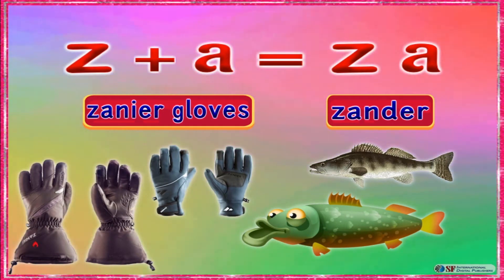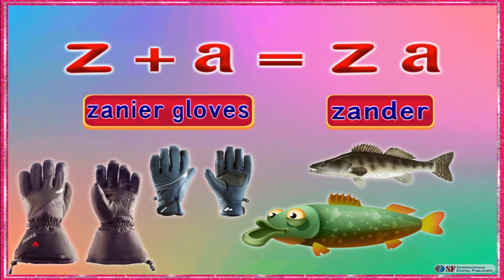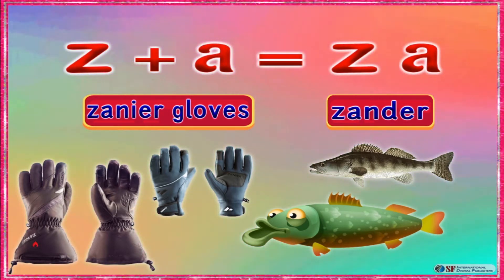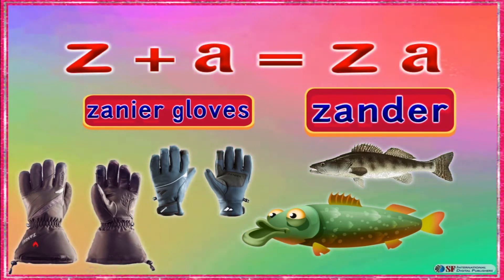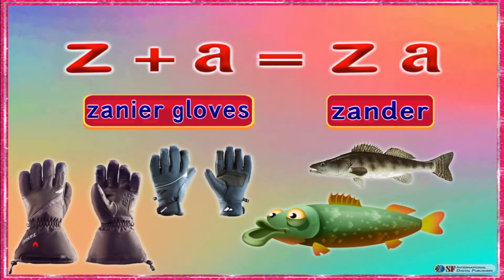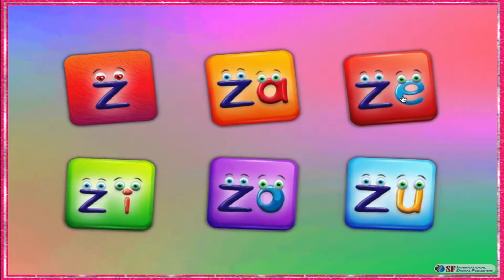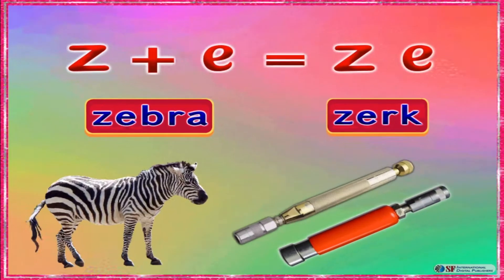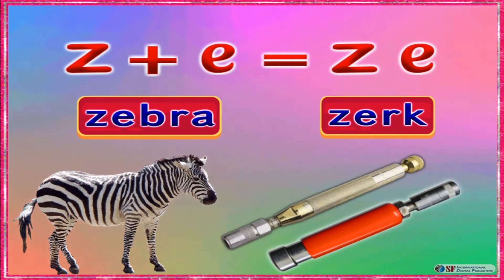Z and A makes ZA. Very good Sarah, like Xenia Gloves and Xander. Z and A makes ZA.